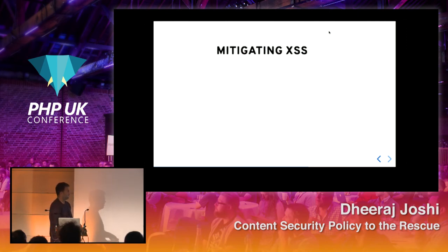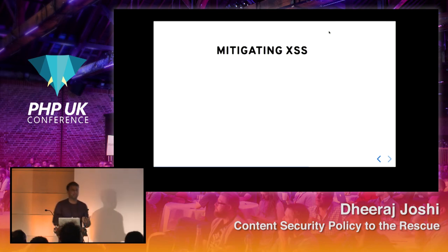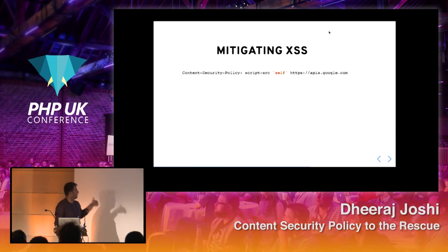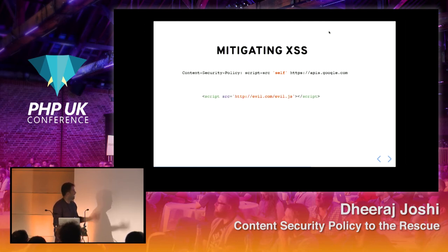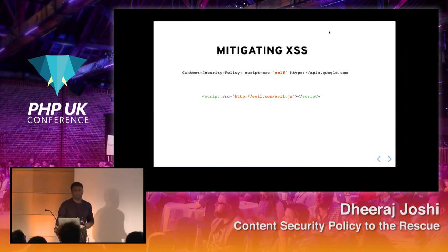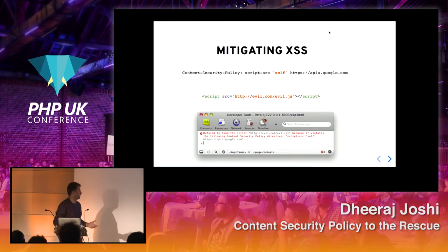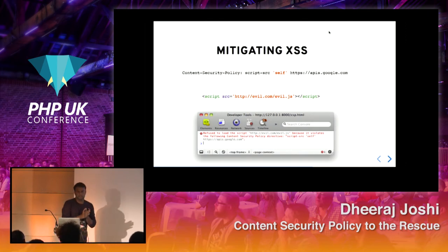We've talked about these approaches and how they help against XSS. In this example where we have script-src 'self' and allow api.google.com, when someone tries to inject a script from evil.com, the browser says 'refused to load the script' — and this is how content security policy prevents the attack.